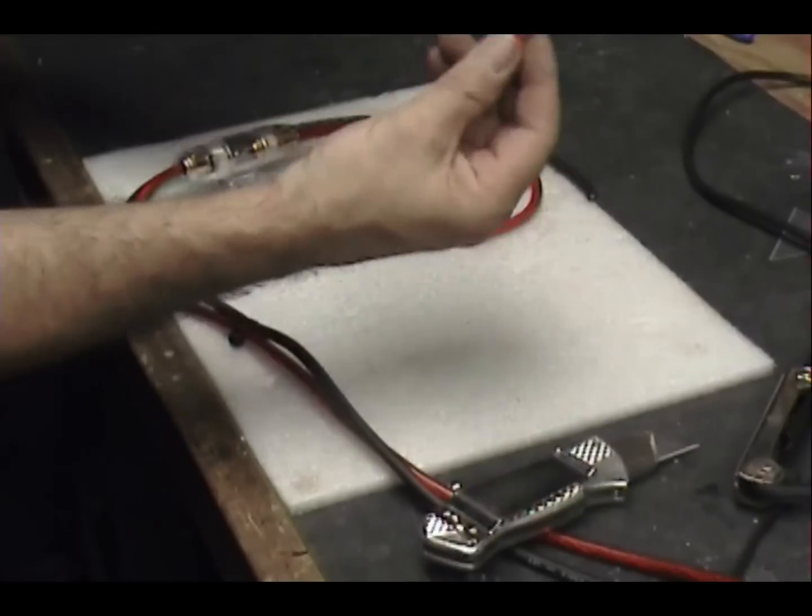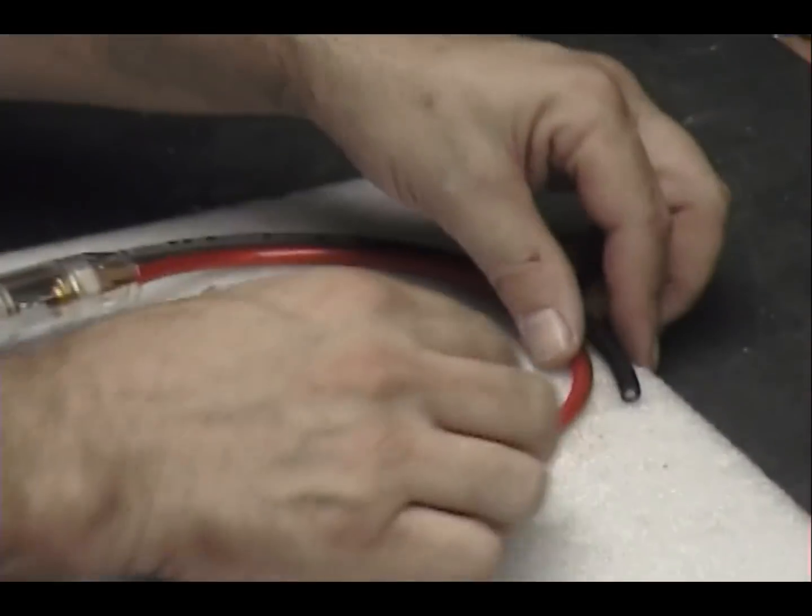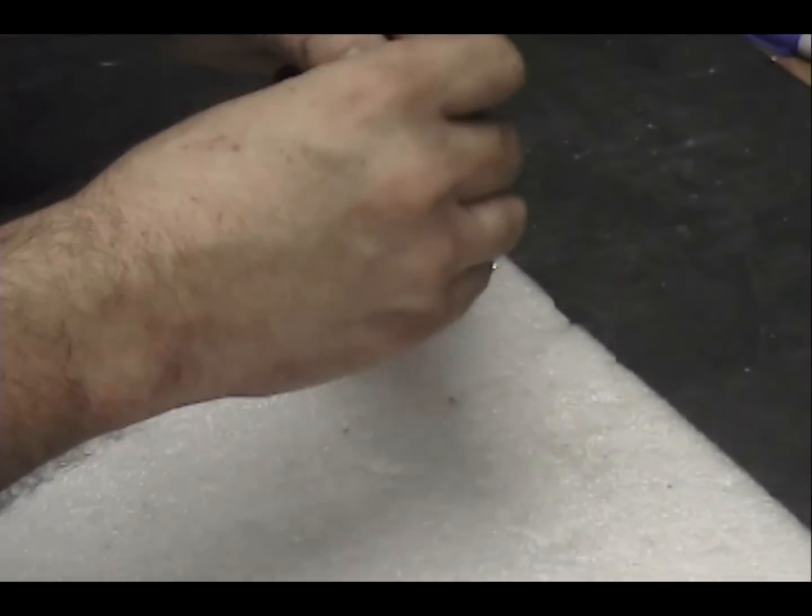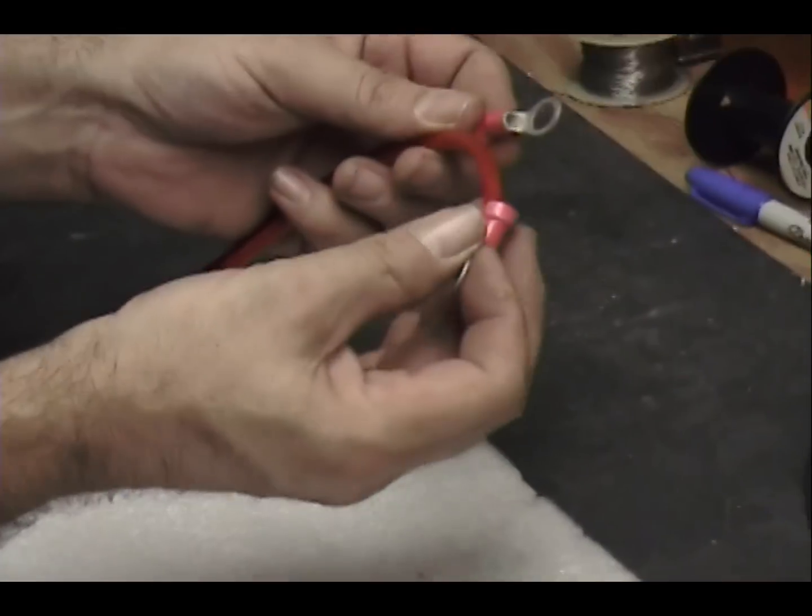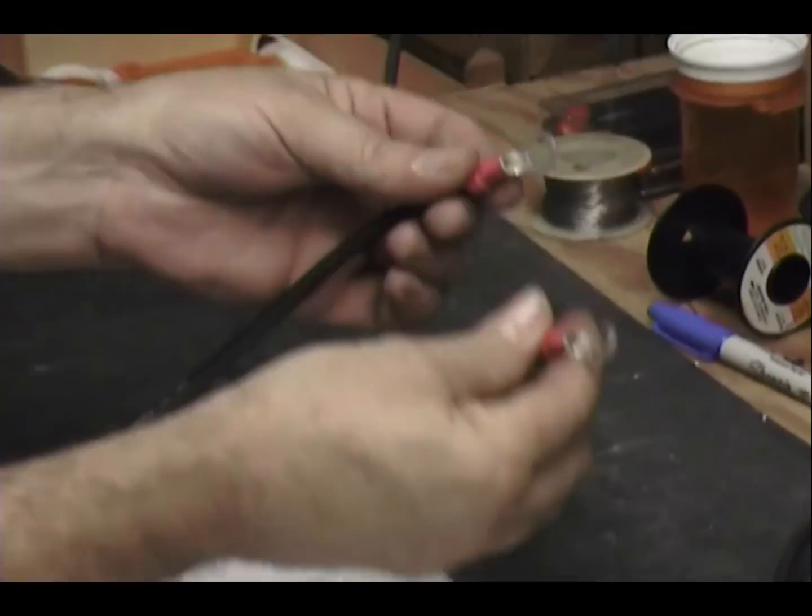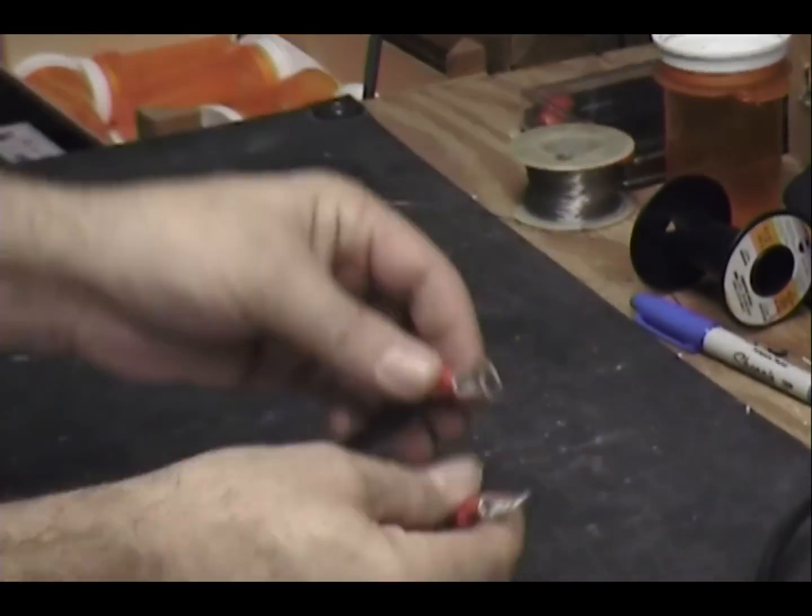Now, I'm sending you these two as well. Okay. Two crimp-ons, and they're both going to go right there. You're going to strip these wires back and put them right there.